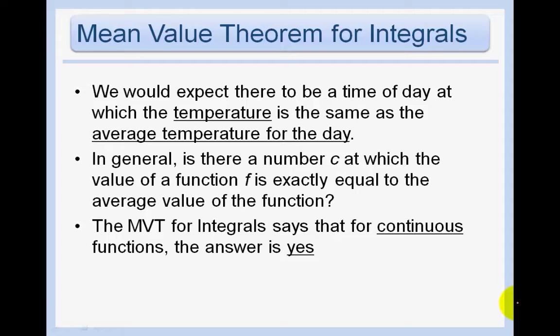Remember, the Mean Value Theorem that we were talking about before said that the average value had to be equal to the slope f prime somewhere. And so now we're just saying that the average value of the function is equal to the actual function at some point.